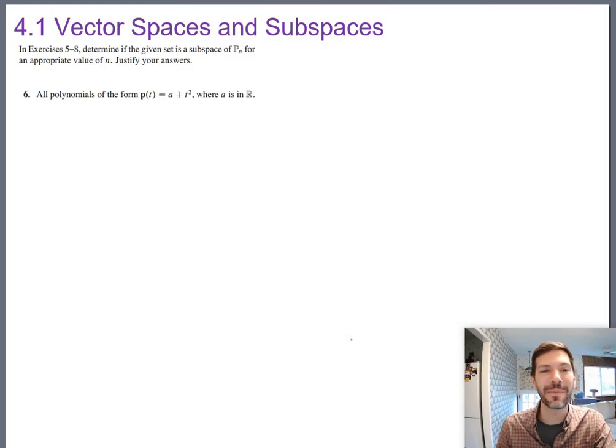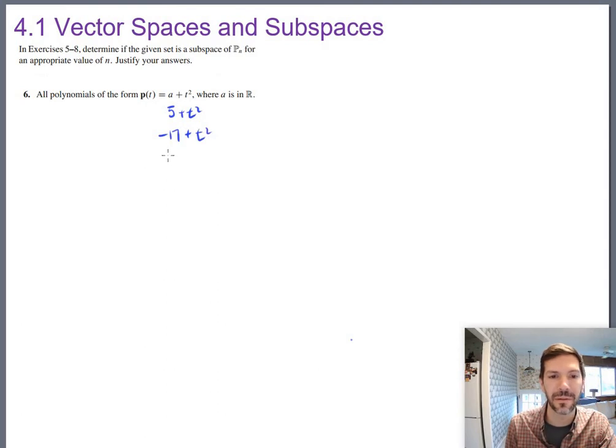That's right. Okay, let's look at number six. So for five through eight, they're saying find out if we've got a subspace of polynomial space. Again, we know polynomials of degree two or whatever are a vector space. So now here they're saying all polynomials of this particular form, a plus t squared, where a is a real number. So examples of this would be things like 5 plus t squared, or negative 17 plus t squared, or pi plus t squared. Those are all vectors from this particular subset of p2.